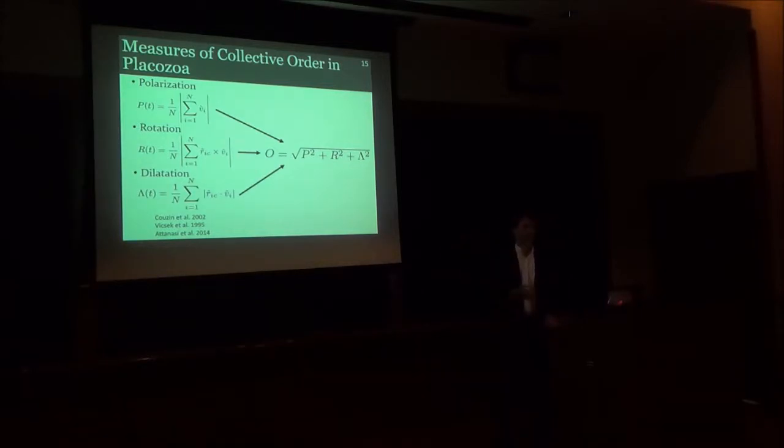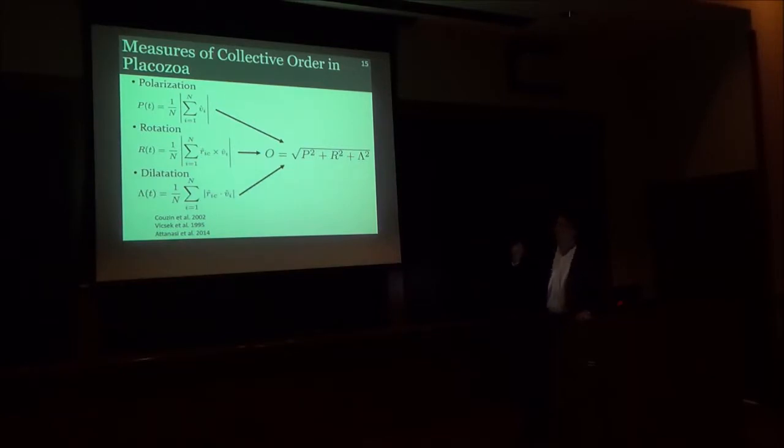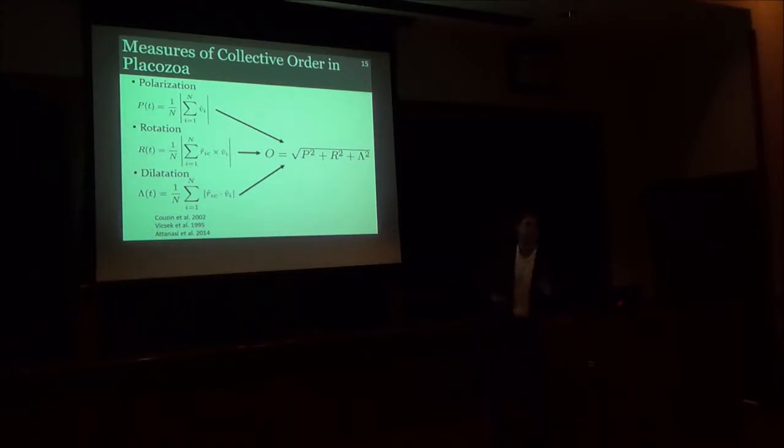My advance on this was to combine these measures into a single unified order parameter. The reason I did this was because, as you could see in the previous video, the internal dynamics of the animal are quite complex. It's not always very polarized, sometimes it's rotating, but these states tend to be mutually exclusive. You can't move in a very polarized fashion and spin in place at the same time. So what I do is I create this unified order parameter to be able to quantify to what extent the animal is moving as an ordered crystal through space, or to what extent is it deviating from this type of ordered movement.